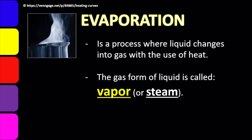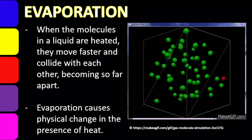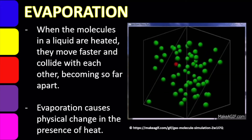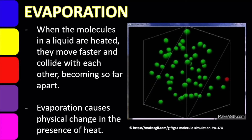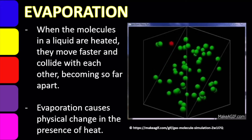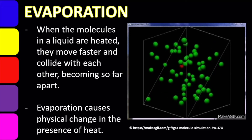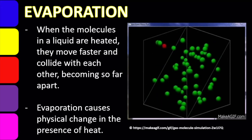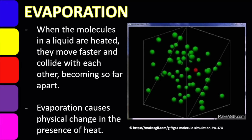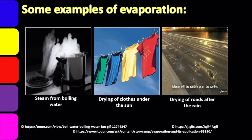The gas form of liquid is called vapor or steam. When the molecules in the liquid are heated, they move faster and collide with each other, becoming farther and farther apart. That is why gas is lighter and more invisible compared to liquid and solid. Evaporation causes a physical change in the presence of heat. Physical change means solid becomes liquid, liquid becomes gas, and so on — because the physical states of matter (solid, liquid, gas) are under physical changes.